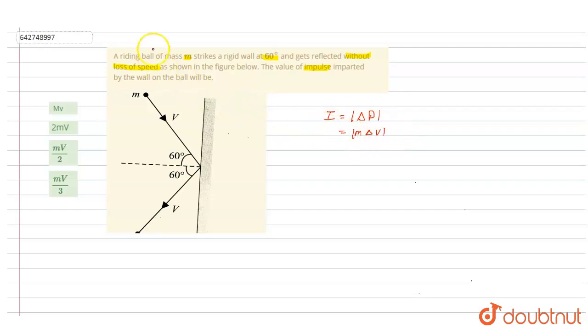Now if I see this question, here we are given that without the loss of speed, that means the magnitude of these two velocities do not change, only the direction changes. So if I name this velocity v1 and this is the final velocity v2, I can write that magnitude of v1 will be equal to magnitude of v2, which can be equal to v velocity.